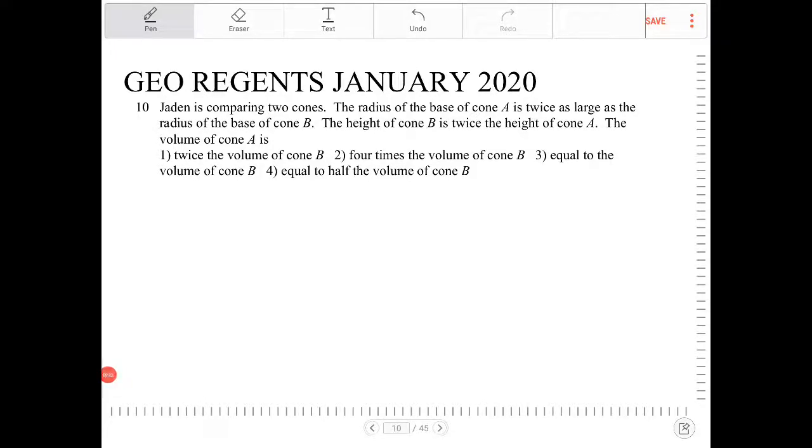Jaden is comparing two cones. The radius of the base of cone A is twice as large as the radius of the base of cone B. The height of cone B is twice the height of cone A. The volume of cone A is...